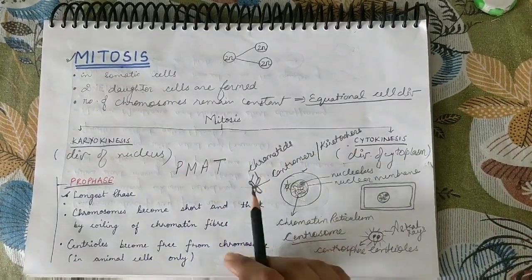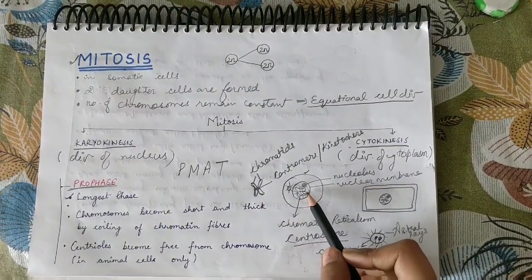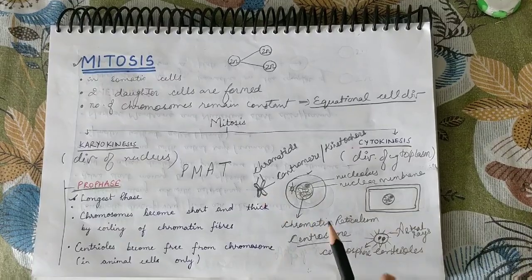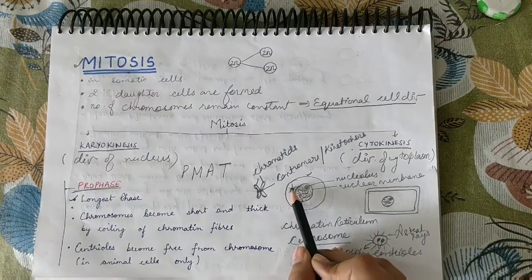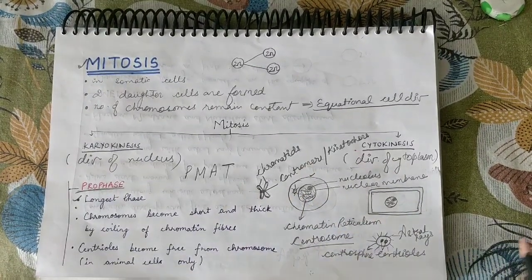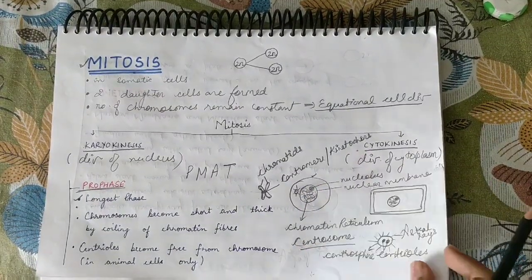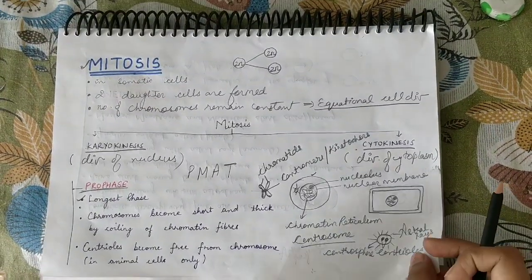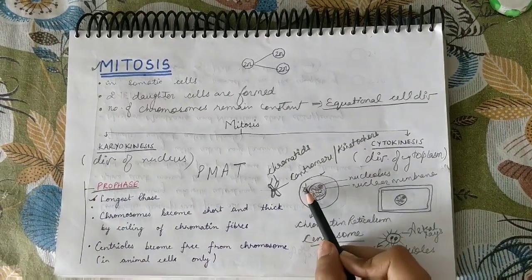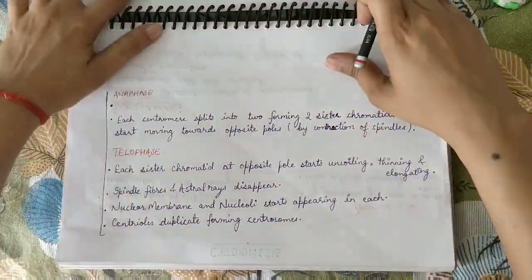In prophase, chromatin reticulum coils and converts into chromosomes. The centrioles, which were bound in the centrosphere, become free — if there is one centriole it splits into two. Fine eyelash-like structures called astral rays develop on each, and they start moving towards opposite poles.